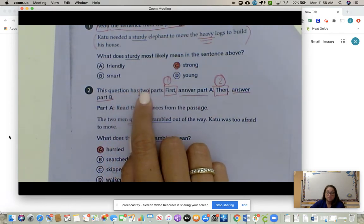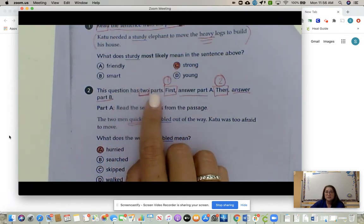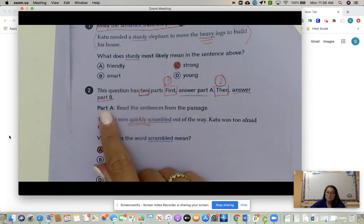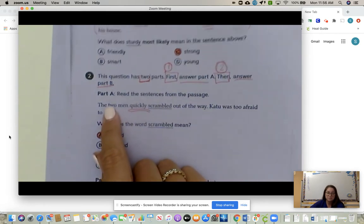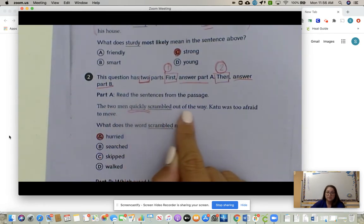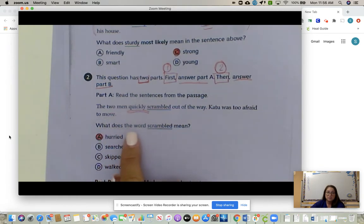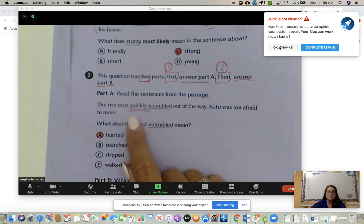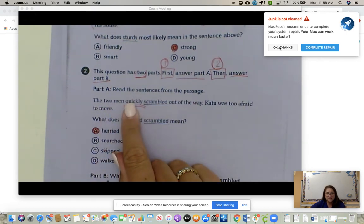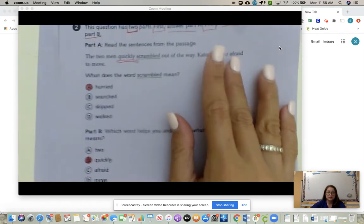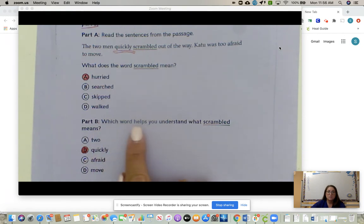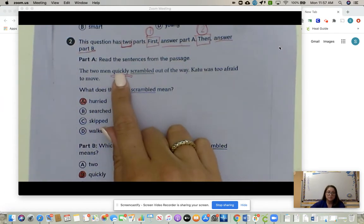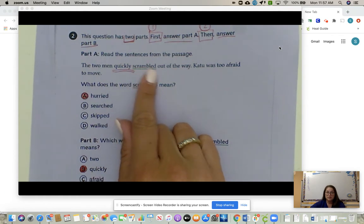Number two: this question has two parts. This is so important. So many students forget to do both. First, it tells you what to do first. Answer part A, then answer part B. Part A, read the sentences from the passage. This is pulled straight from the passage. The two men quickly scrambled out of the way. Cat two was too afraid to move. So what does the word scrambled mean? Hurried, searched, skipped, or walked? Well, the student said hurried. And that would make sense. The two men quickly hurried out of the way. Well, part B is saying, oh, how do you know that? Which word helps you understand what scrambled means? Too, quickly, afraid, or move. So when you're using your context clues, quickly is the one that helps you know, you quickly hurried out of the way.